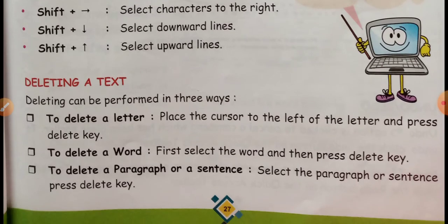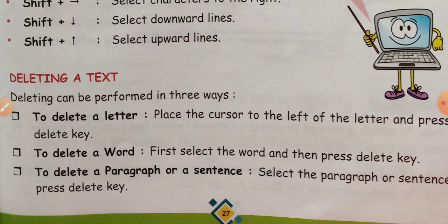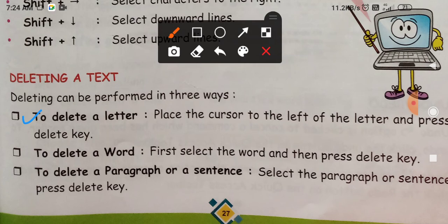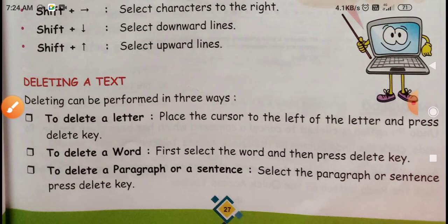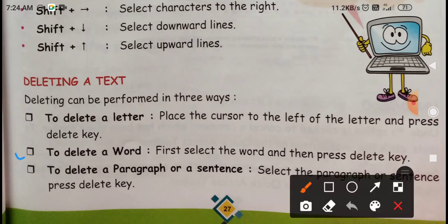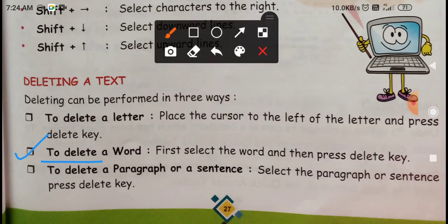Deleting a text can be performed in three ways. To delete a letter, place the cursor to the left of the letter and press delete key. Then your text will be deleted. And next, to delete a word, first select the word and then press delete. To delete paragraph or sentence, select the paragraph or sentence and press delete key.